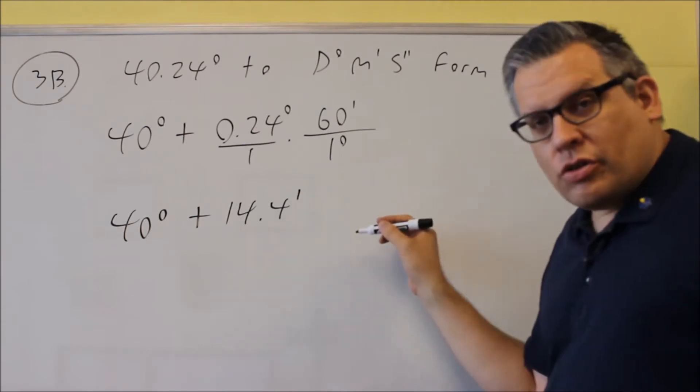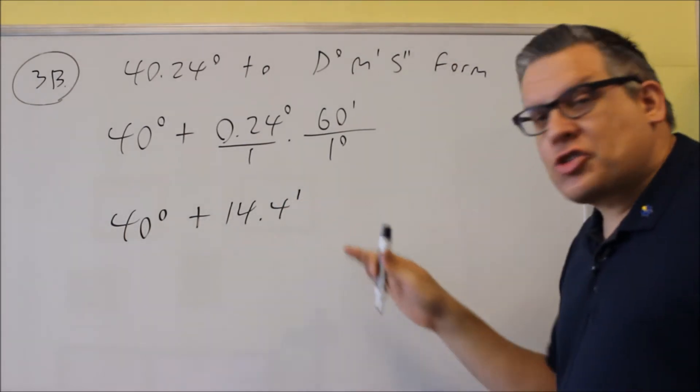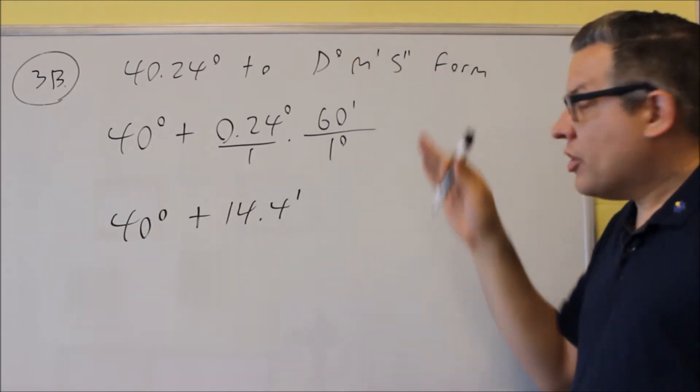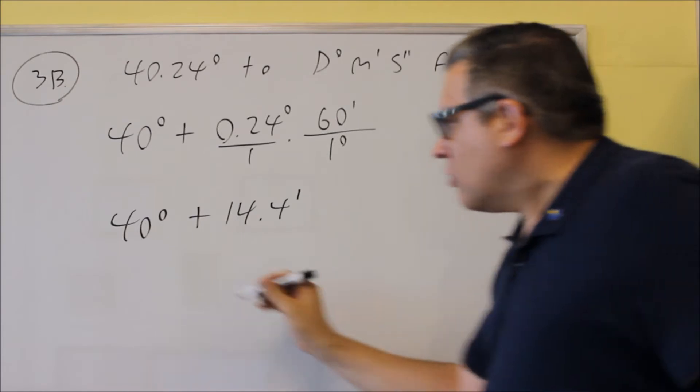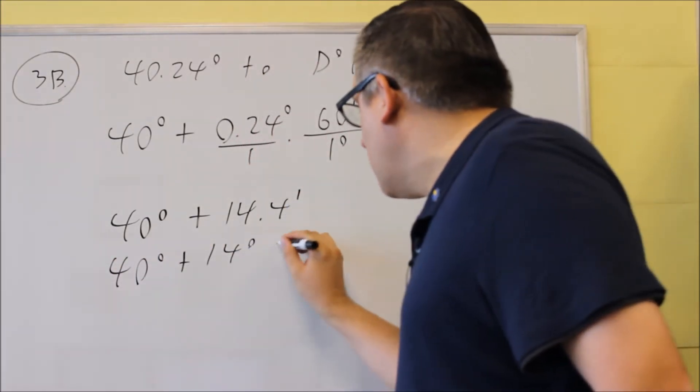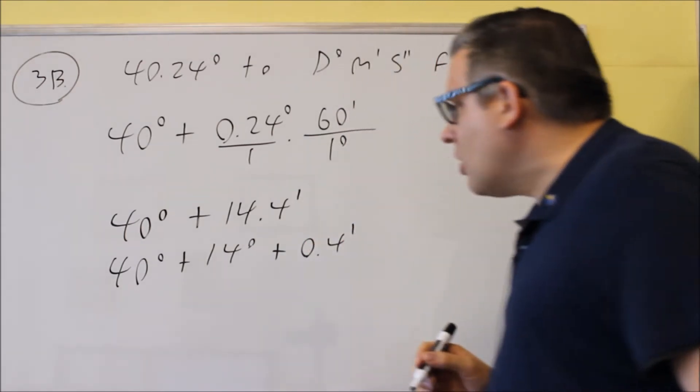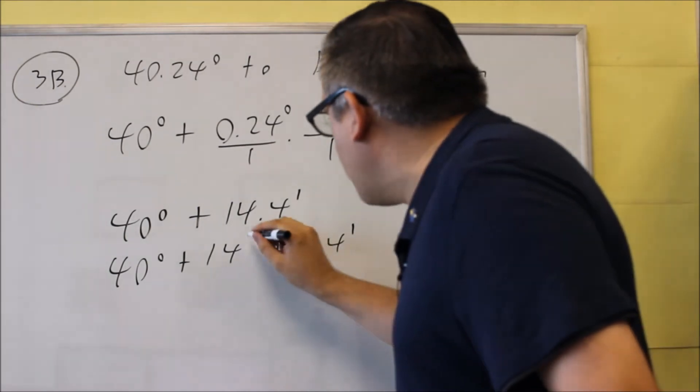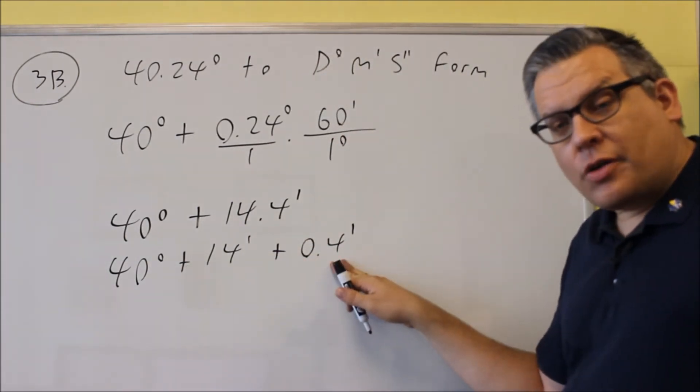Next thing we want to do is split up the decimal again. We want to keep going until we get whole numbers for all these. Your degrees, minutes, seconds should all be whole numbers. So we do that by doing this. We'll do 40 degrees plus 14 minutes plus 0.4 minutes. So 40 degrees, we have 14 minutes, and we have 0.4 minutes here.